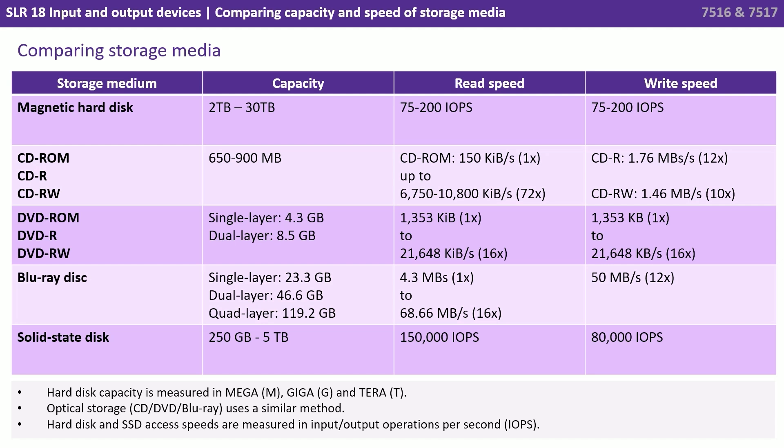We can see that magnetic hard disks have the highest capacity. After that we tend to have solid state, and then various formats of optical media — with Blu-ray being the biggest, followed by DVD, and the smallest being CDs.